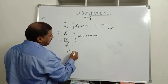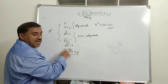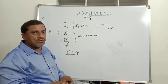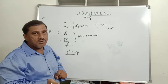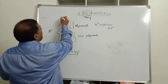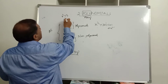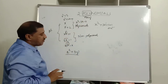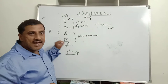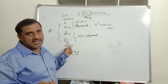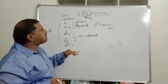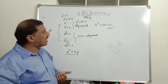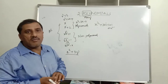x² + 3y is also a polynomial but in two variables — x is one variable and y is another. In 10th standard we study only polynomials in one variable. Examples include: x, x + 2, x² + 3, x² + 2x + 4, and x³ − 3x − 2. These are polynomials, while expressions with fractional exponents are non-polynomials. The difference between an algebraic expression and a polynomial is whether the exponent is a whole number.